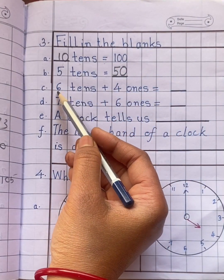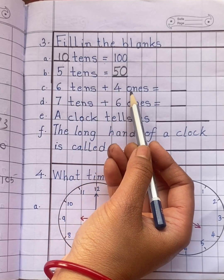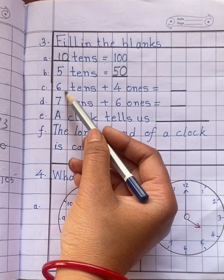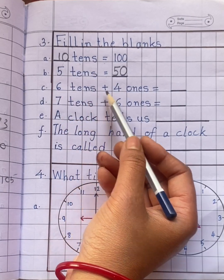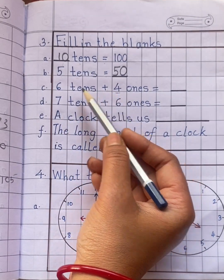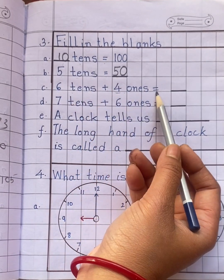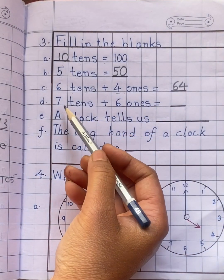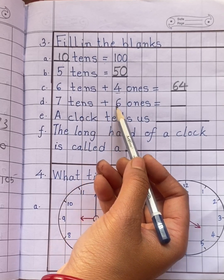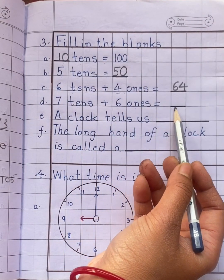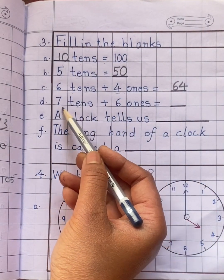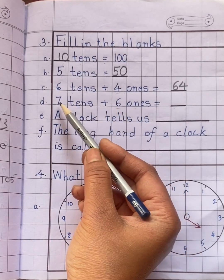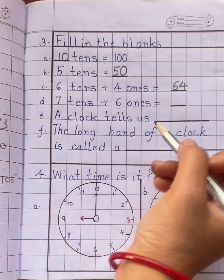Next question is 6 tens plus 4 ones is equal to what. 6 tens means 60, 4 ones means 4. 60 plus 4 is equal to 64. Next question: 7 tens plus 6 ones is equal to what. 7 tens is equal to 70, 6 ones means 6. 70 plus 6 is equal to 76.